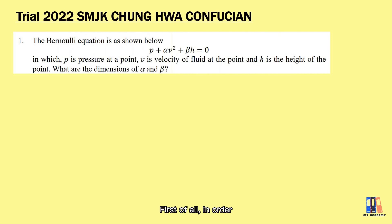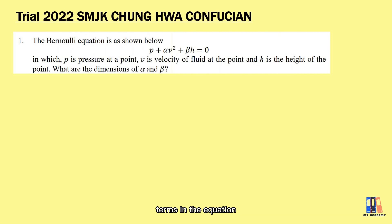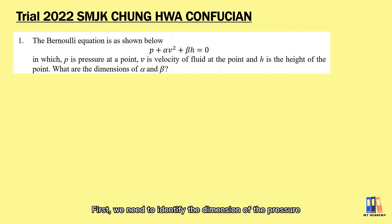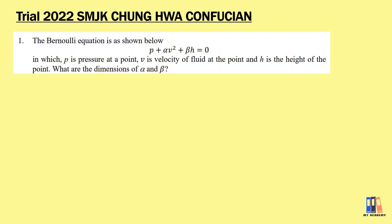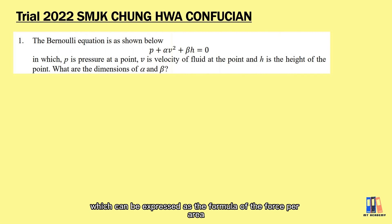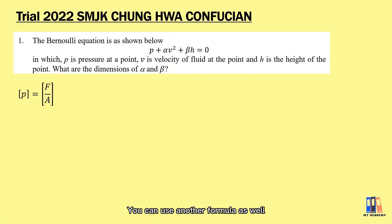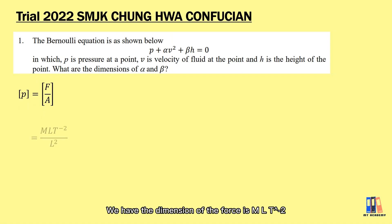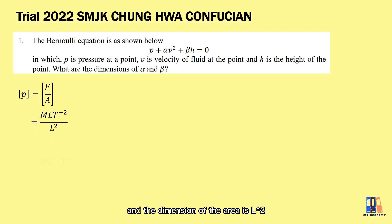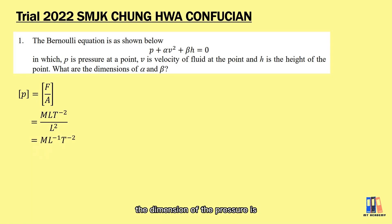First of all, in order for this equation to be valid, every term in the equation should have the same dimension. We need to identify the dimension of the pressure, which can be expressed as force per area. We have the dimension of force as ML per T squared, and the dimension of area is L squared. Simplifying the expression, you should obtain the dimension of pressure as M per L per T squared.